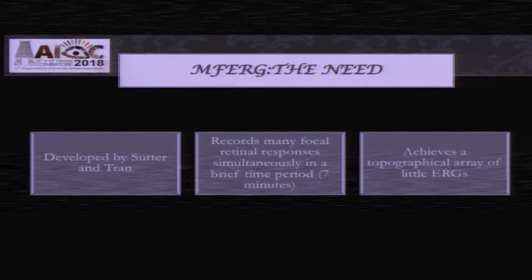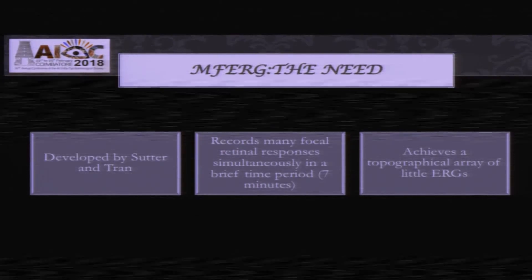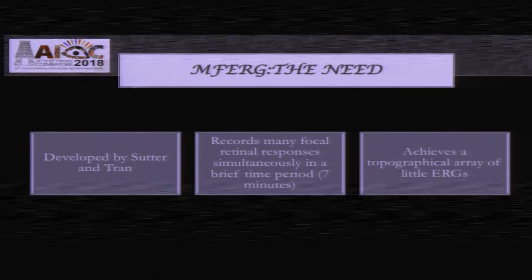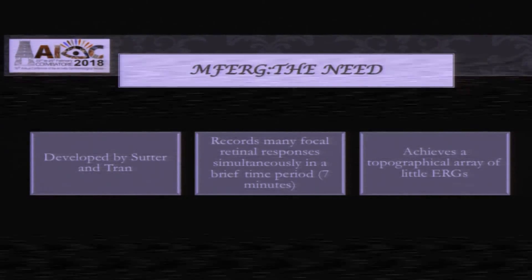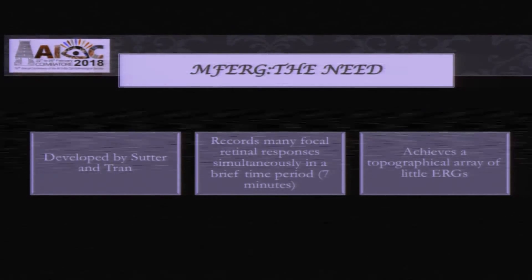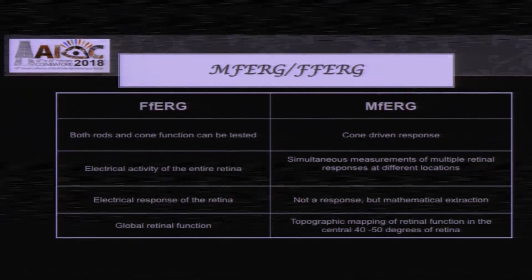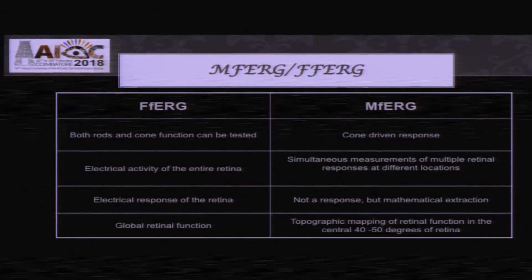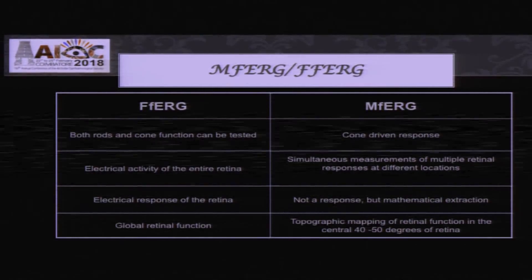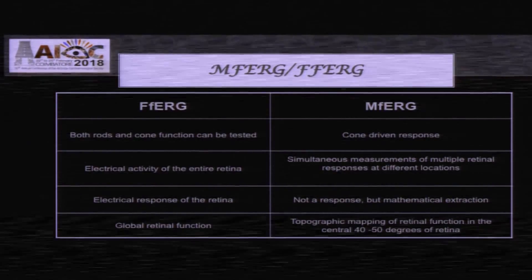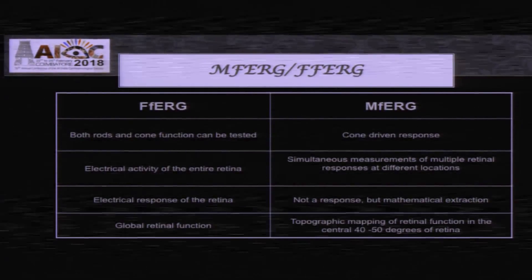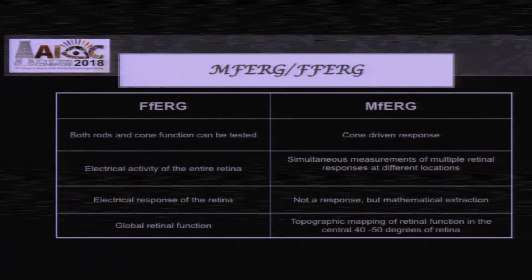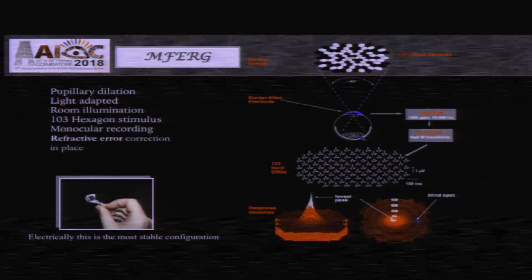As we saw earlier, the ERG and EOG are basically a mass response, so focal problems or focal dysfunction of the retina will be missed. To look at the focal dysfunction as well as the distribution of disease, we need the multifocal ERG. It differs from the full-field ERG in that multifocal ERG is always done in a light-adapted condition, so it is always a cone-driven response — rods are not tested. It is a focal response, but not a true response, rather a mathematical extraction.